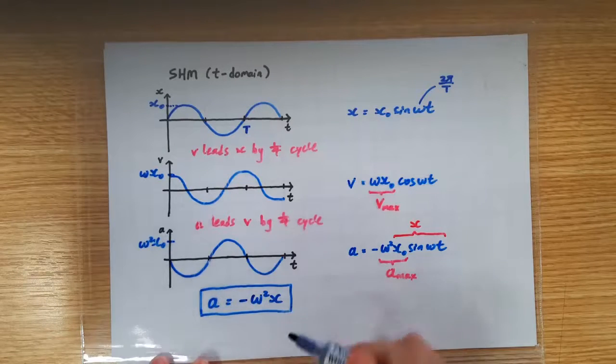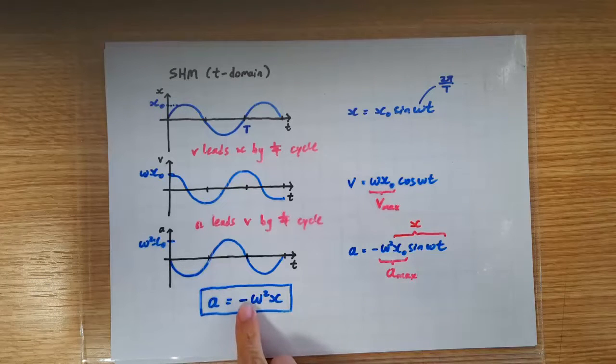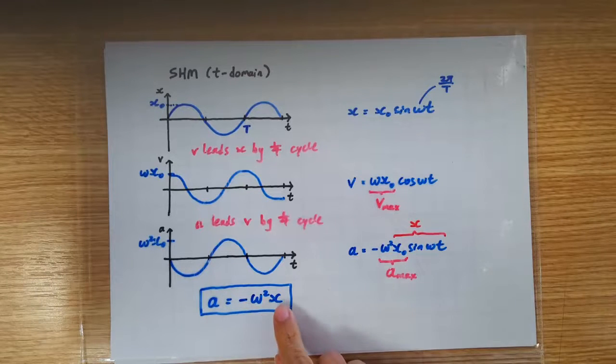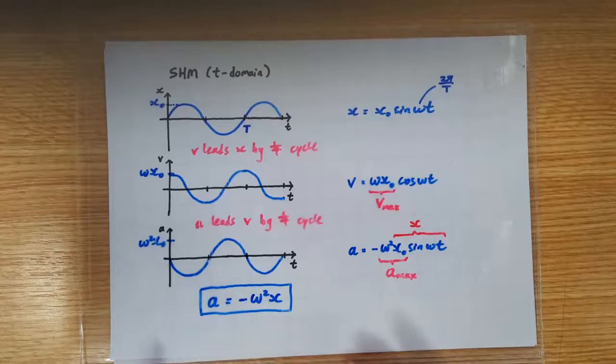So whenever you have a motion whose acceleration is opposite in sign and directly proportional to its own displacement, then that motion is going to be SHM.